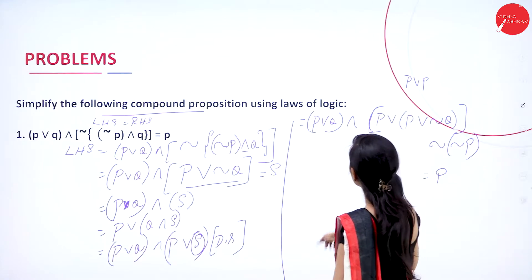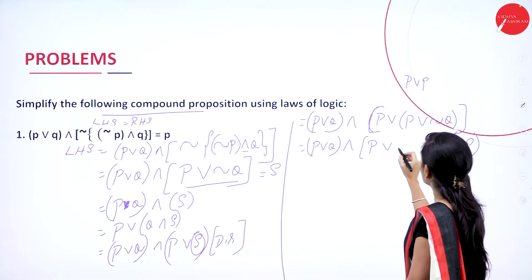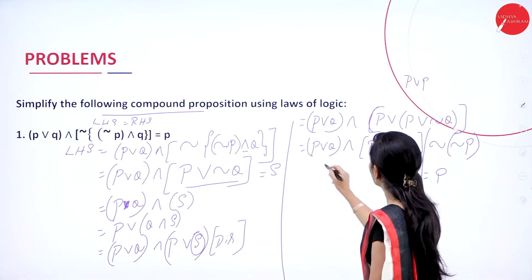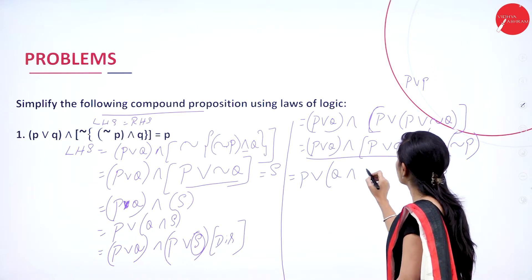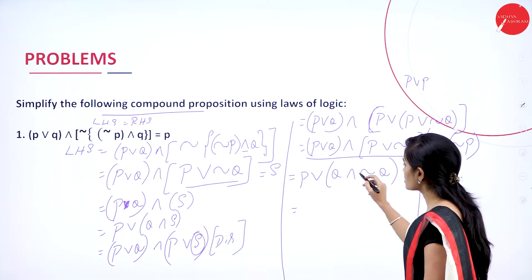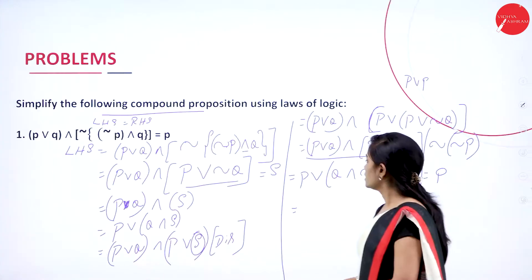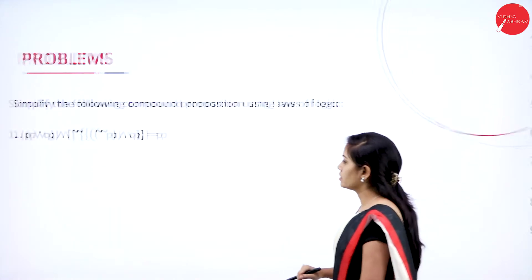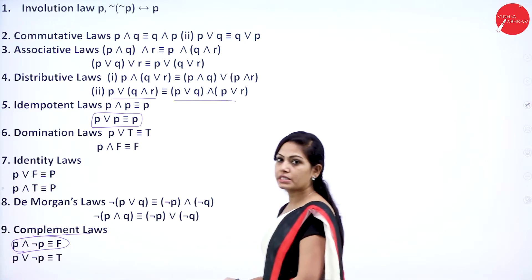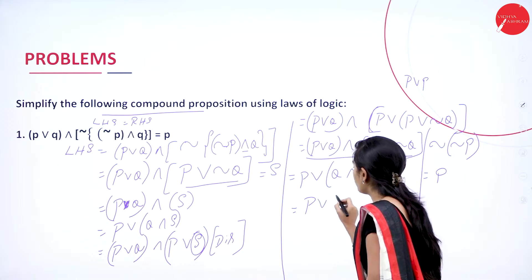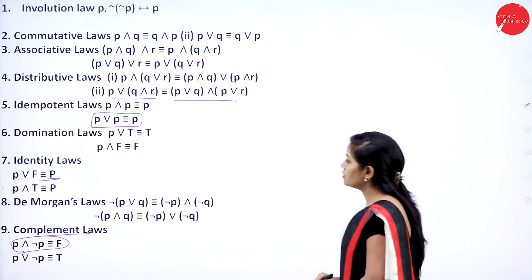So I can apply the idempotent law — in place of P ∨ P, I write P. Now I have P ∧ (Q ∨ ¬Q). I apply the distributive law again. In place of Q ∧ ¬Q, I apply the complement law: Q ∧ ¬Q equals false (F). So P ∨ F, and by the identity law, P ∨ F equals P. That is your RHS value.